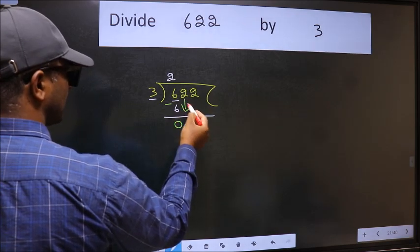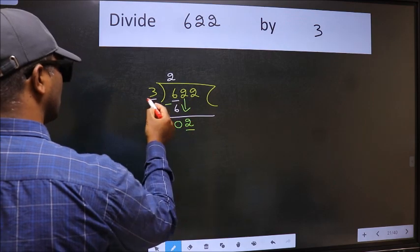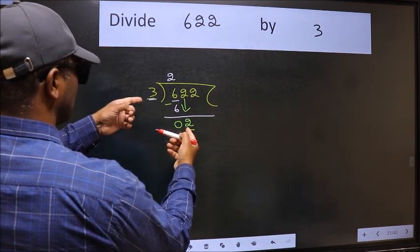After this bring down the beside number. So 2 down. Now here we have 2 and here 3. 2 is smaller than 3.